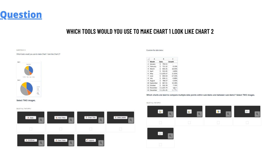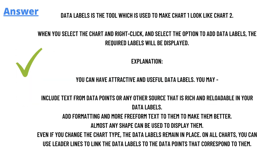We have some data sets to make the charts. The answer to the question is: Data Labels is the tool used to make Chart 1 look like Chart 2. When you select the chart, right-click and select the option to add data labels, and the required label will be displayed.